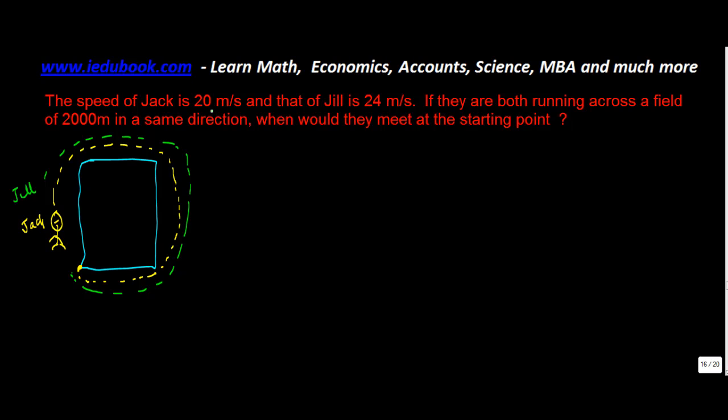Now, you have been asked that if they are both running in the same direction, then when would they meet at the starting point? So the length of the field is 2000 meters. So time taken by Jack is how much? The field is 2000 meters. He takes 20 meters per second. So the time that he takes is 100 seconds. So after every 100 seconds, Jack reaches this starting point.